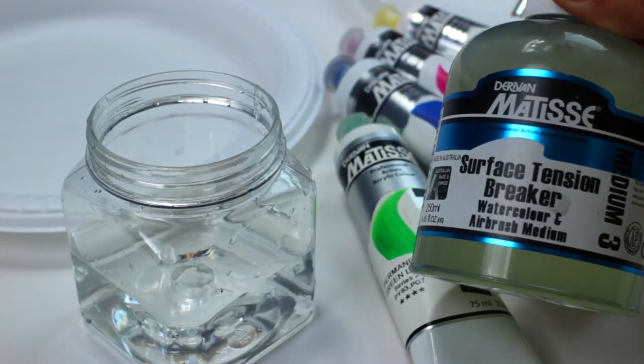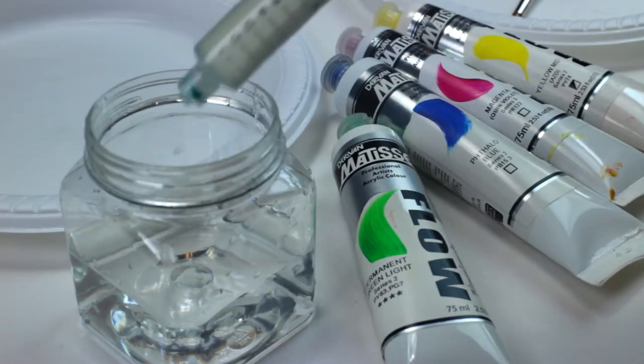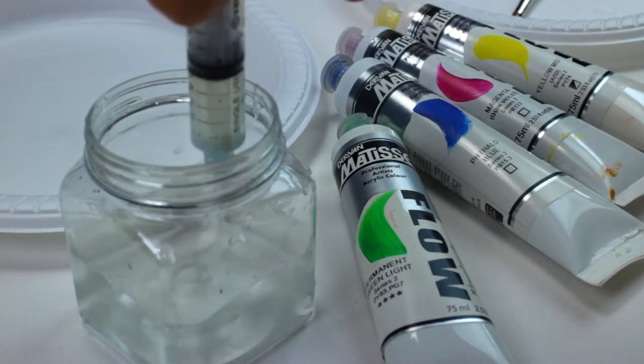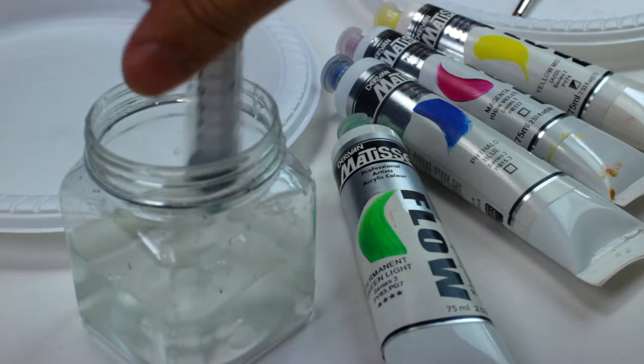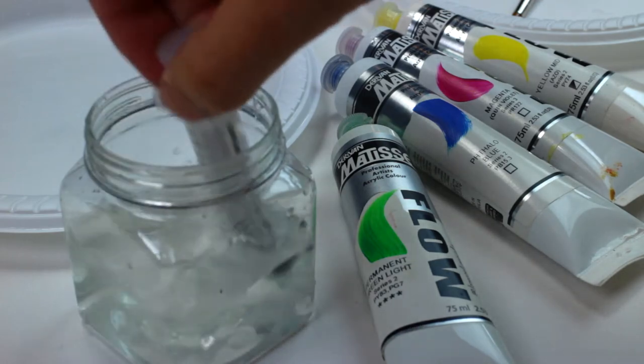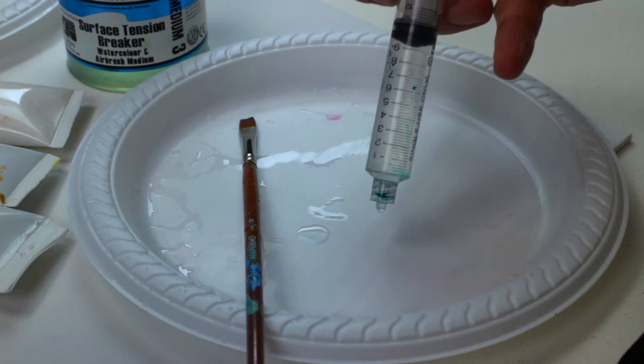Today we're looking at surface tension breaker and I'm going to combine one part surface tension breaker to nine parts water. I want to combine those thoroughly, so just give that a little bit of a mix.